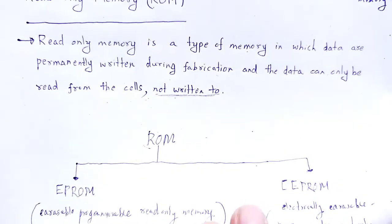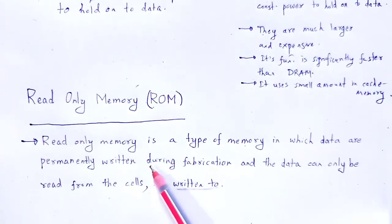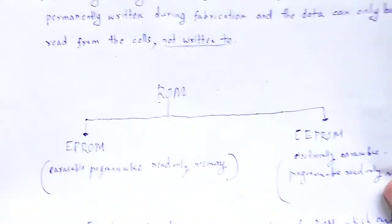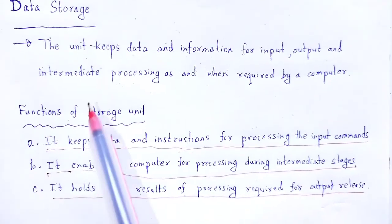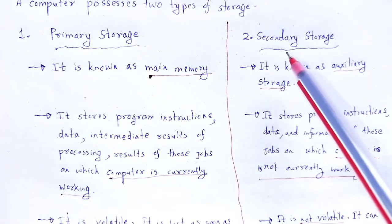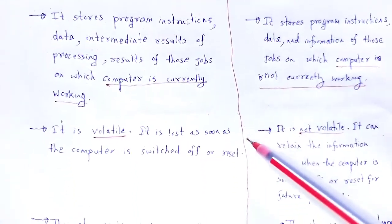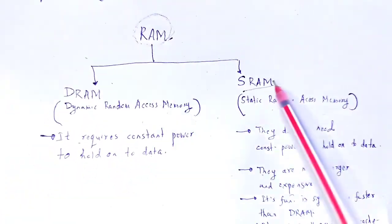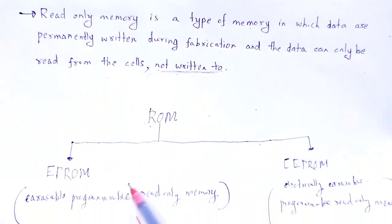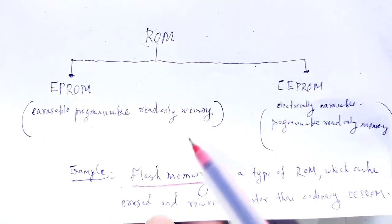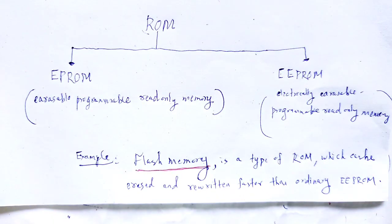In this way, we studied about random access memory, its types, read-only memory, and some types. With the help of this video lecture, you understand the concept of data storage, functions of the data storage unit, types of data storage — primary storage and secondary storage — some basic differences between these two storage units, idea of RAM and its types and functions, and read-only memory and its types. With this useful and informative session, let me wind up. Thank you.